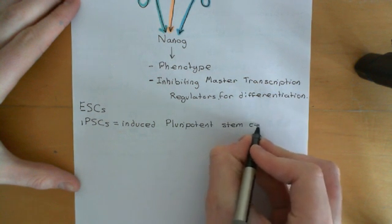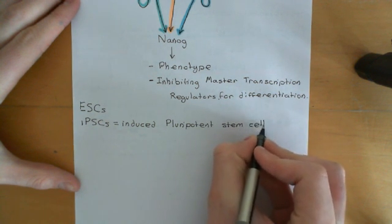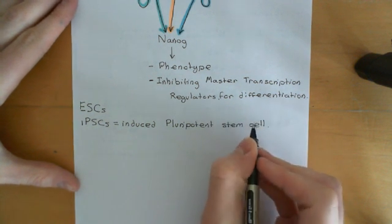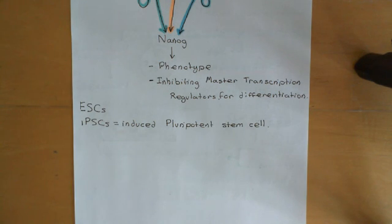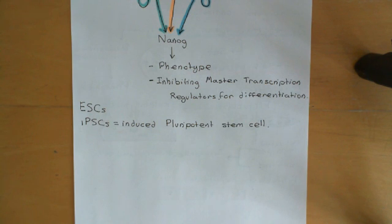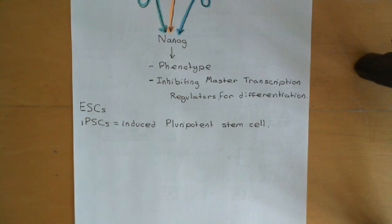So what is an induced pluripotent stem cell? Basically, the idea is: can we take a somatic, fully differentiated cell and convert it back into a pluripotent stem cell? This is the core idea behind induced pluripotent stem cells.